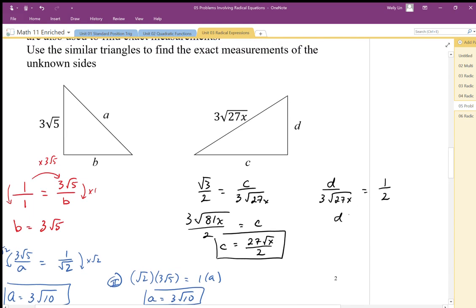Again, we can just solve this algebraically if you like. And we end up with 3 root 27x all over 2. And we could factor out the 9 there. So we end up with 9 root 3x all over 2.